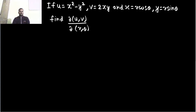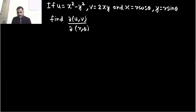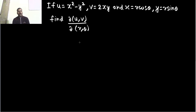In this question it is given u is x square minus y square, v is 2xy, x is r cos theta and y is r sine theta. We have to find the Jacobian of u, v with respect to r and theta.